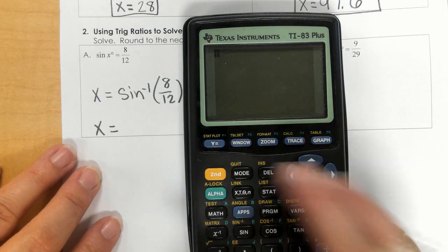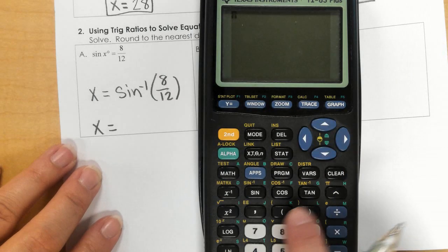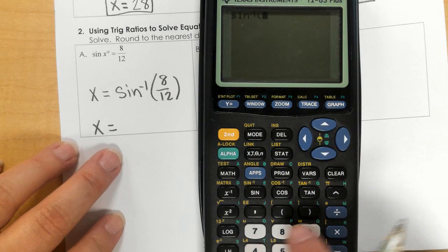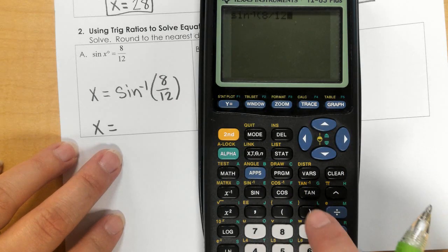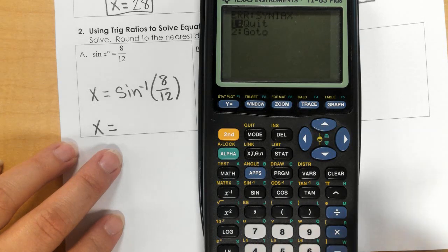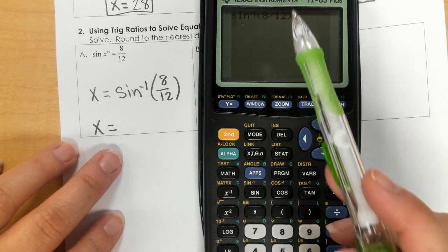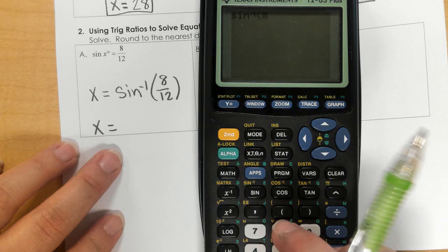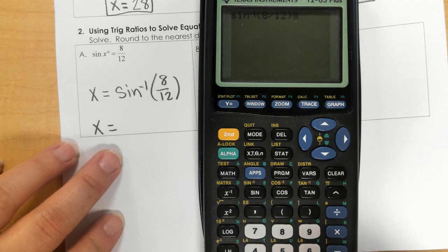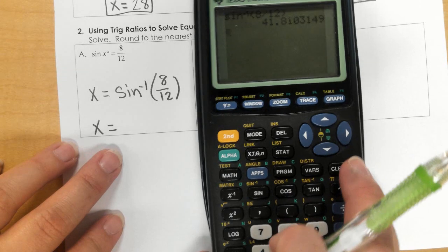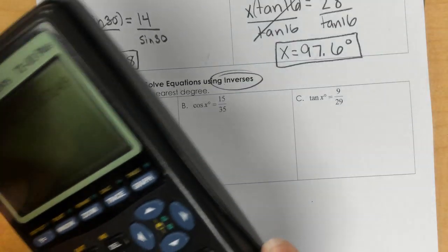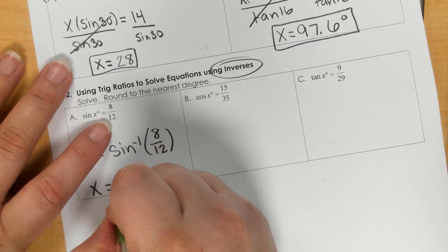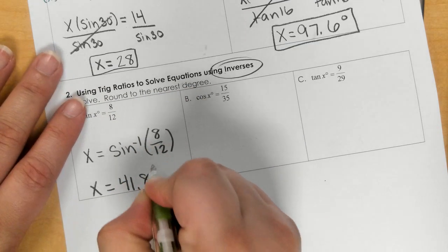So, I'm going to clear it. I'm going to use second sine, and then put my fraction in 8 divided by 12, close the parenthesis. Okay, so I put an extra plus sign on there by accident. So, let's clear that out. Second sine, 8 divided by 12, close the parenthesis. We get 41.8. And that would be degrees.